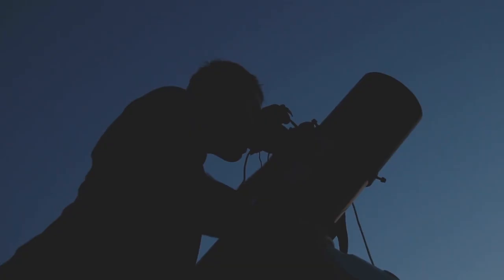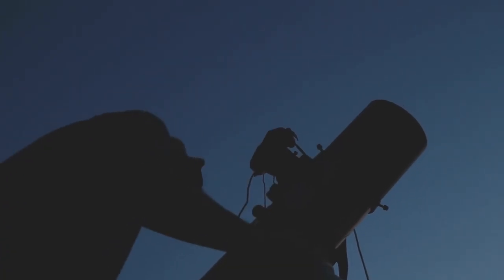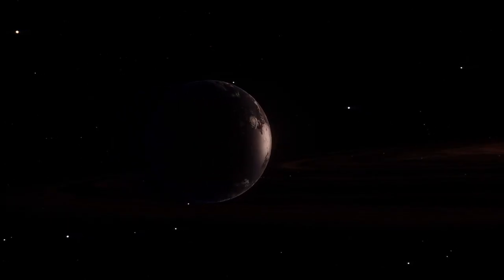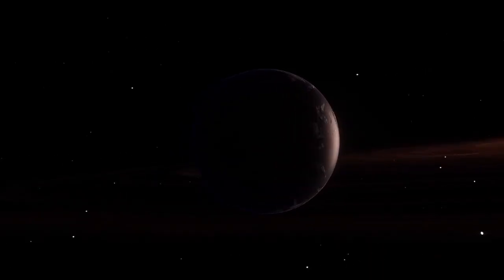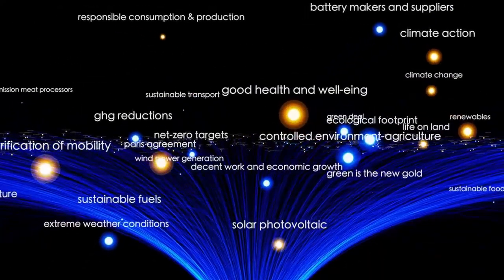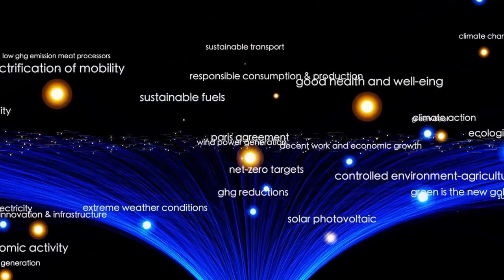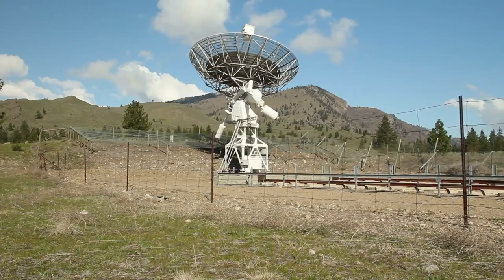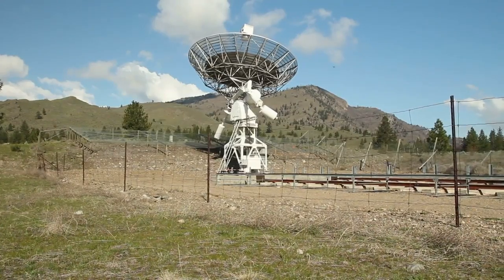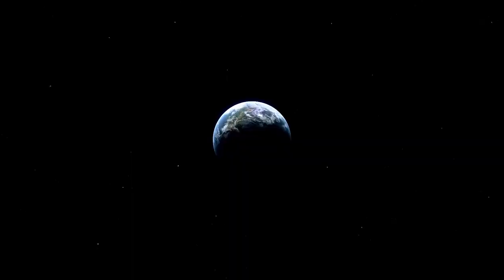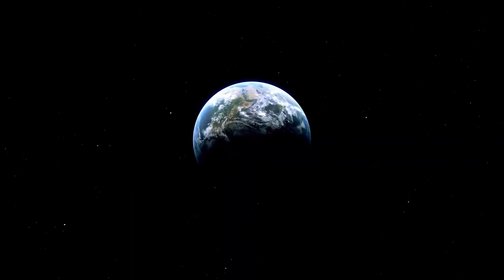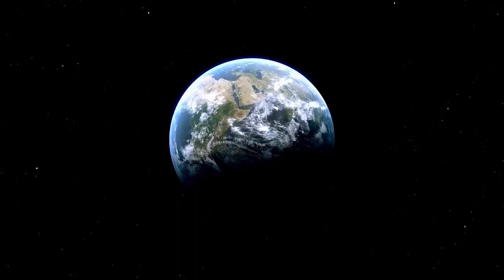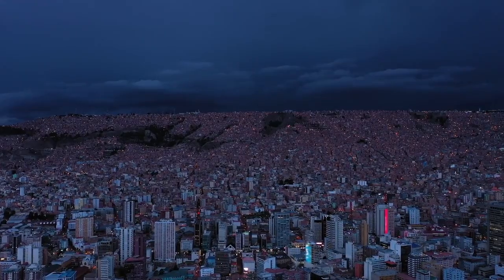Intriguingly, Proxima Centauri b receives nearly the same amount of energy as Earth receives from our own sun, raising the possibility of liquid water and life. As we move beyond our own solar system, we enter the domain of exoplanets, worlds circling stars other than the sun. With an estimated 200 billion stars scattered throughout the universe, the chances of discovering new exoplanets are virtually limitless.